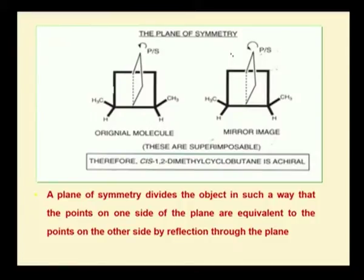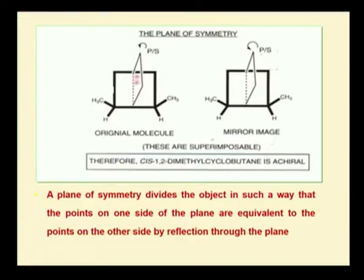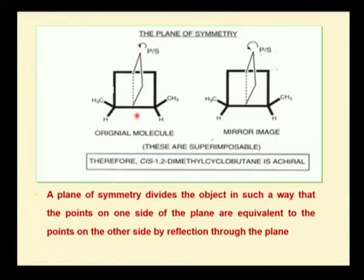The plane of symmetry, as seen in the discussion of chiral and achiral properties, divides the object such that the point on one side of the plane is equivalent to the point on the other side when you reflect the molecule through the plane. Taking a molecule and bisecting it gives a reflection — in the cis form this is observed clearly. In the trans form, the methyl group will be present differently, making that an achiral molecule. The plane of symmetry is seen when bisecting gives the reflection of the group present.